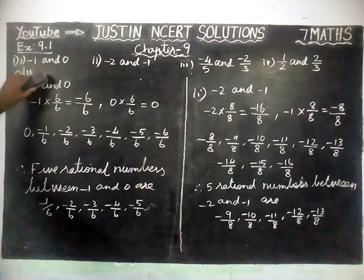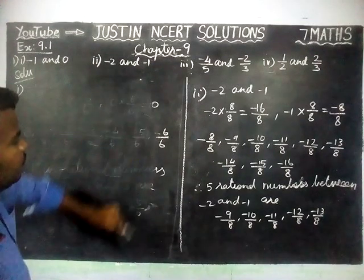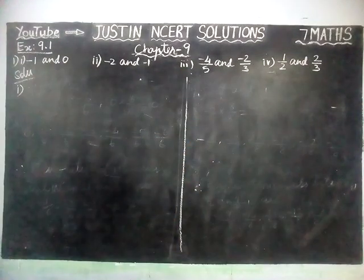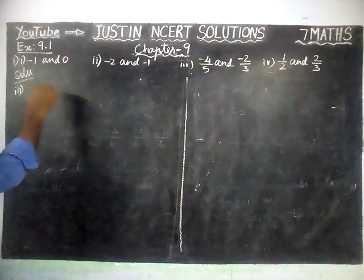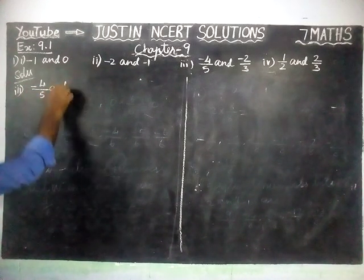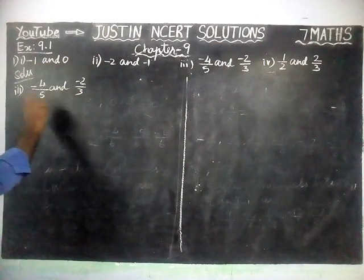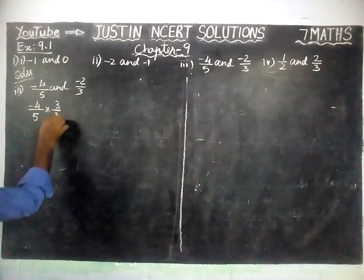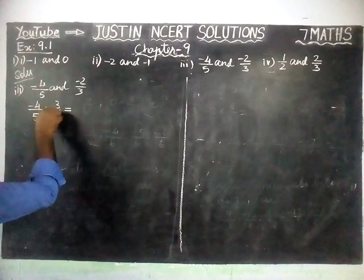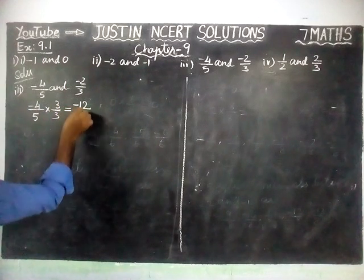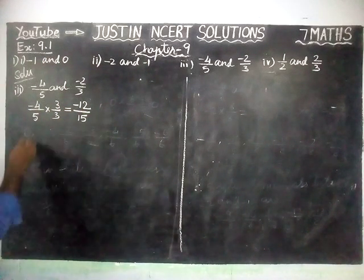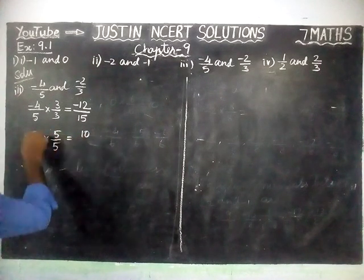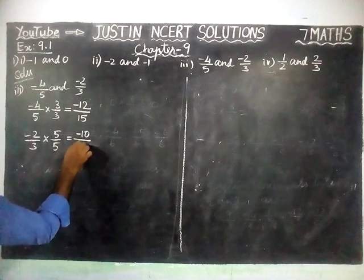Next, we are going to solve the third question: find 5 rational numbers between minus 4 by 5 and minus 2 by 3. Here, the denominators are different, so first we have to convert into equal denominator. So, minus 4 by 5 into 3/3 equals minus 12 by 15. And minus 2 by 3 into 5/5 equals minus 10 by 15.